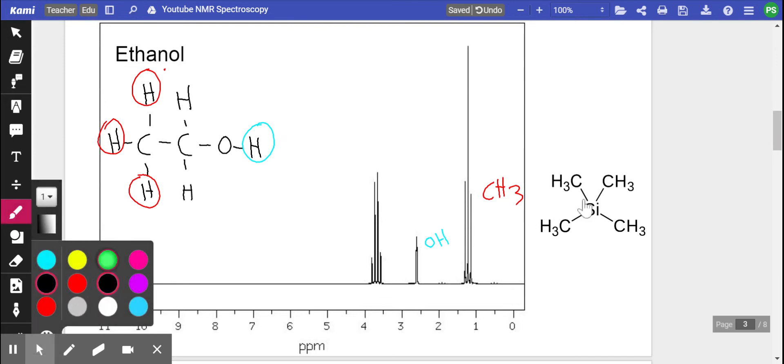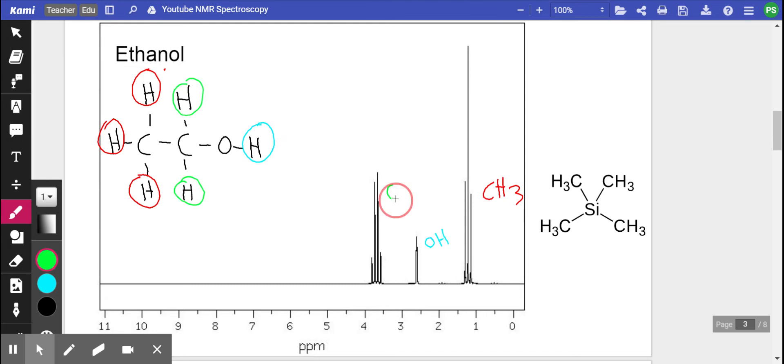And finally we have the third hydrogen environment which is here, the CH2 group. It needs an even weaker magnetic field because it is also close to the oxygen over here.